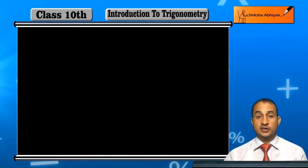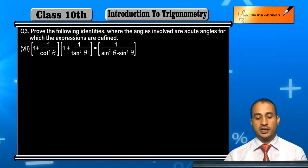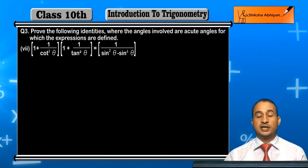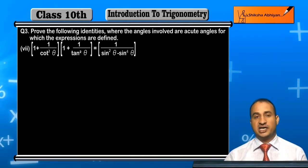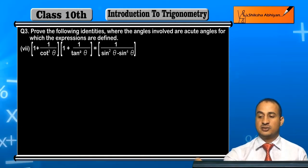Now student, we will prove the 7th part of question 3, which is (1 + 1/cot²θ) multiplied by (1 + 1/tan²θ), and we will prove it equals 1/sin²θ. So we will change the complete left side to the right side.